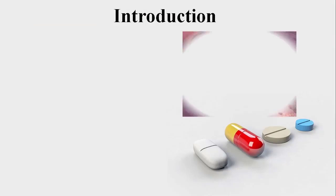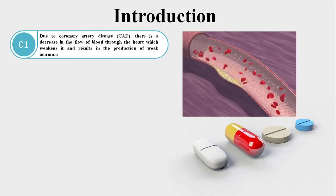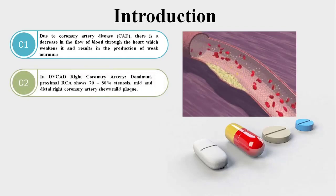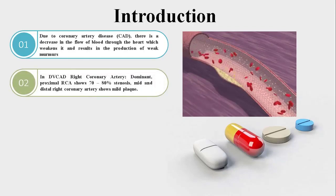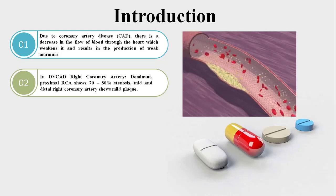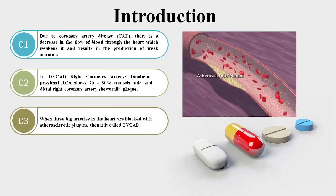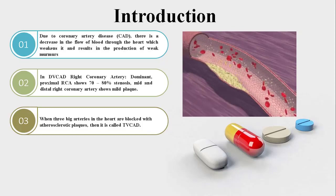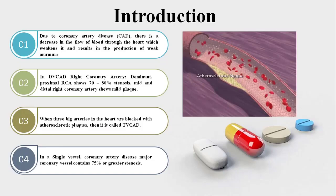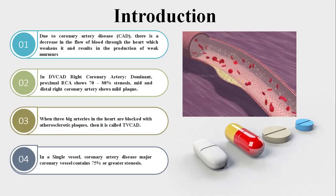Due to coronary artery disease, there is a decrease in the flow of blood through the heart, which weakens it and results in the production of heart murmurs. In DVCAD, the right coronary artery dominant proximal RCA shows 70–80% stenosis. Mid and distal right coronary artery shows mild plaque. When three big arteries in the heart are blocked with atherosclerotic plaque, it is called DVCAD. In single-vessel coronary artery disease, the major coronary vessel contains 75% or greater stenosis.